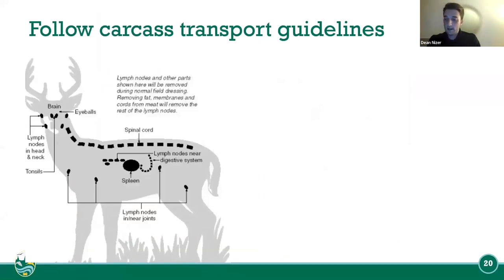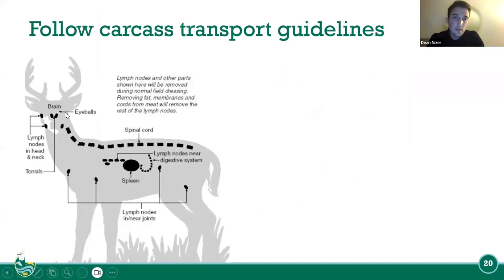This diagram shows where CWD is located throughout the body, which puts susceptible populations at risk. We can test all the lymph nodes, the spinal cord, the brain, the eyeballs, and the spleen — there are different options for sampling deer for chronic wasting disease.